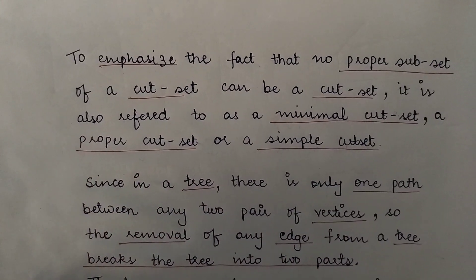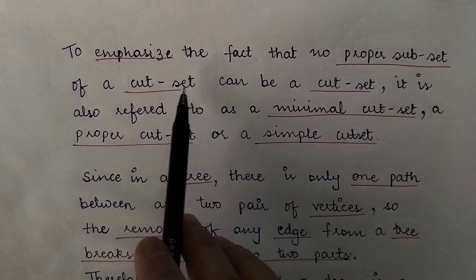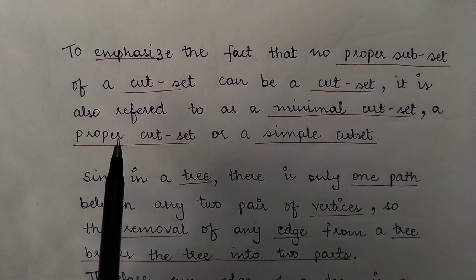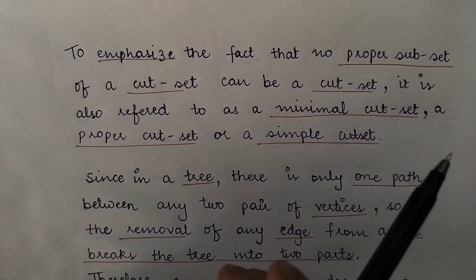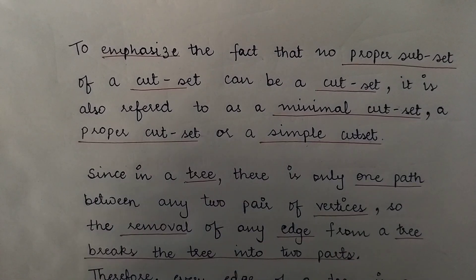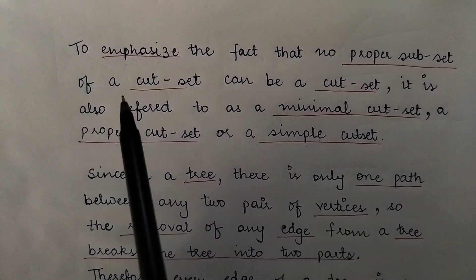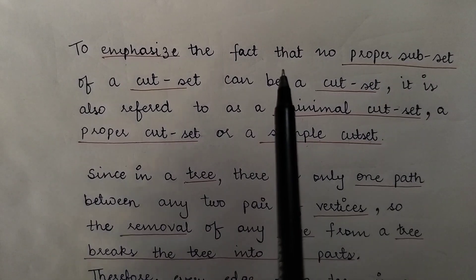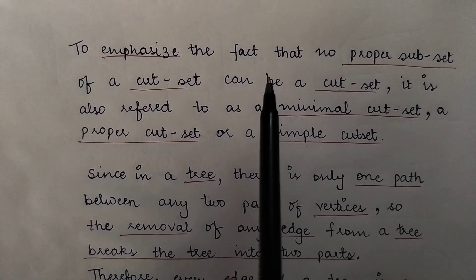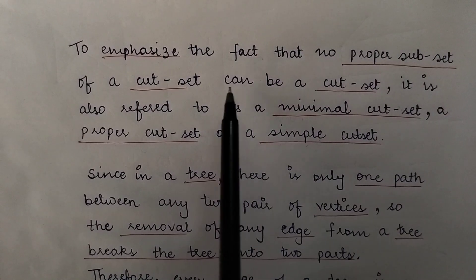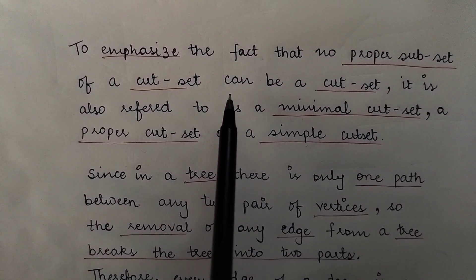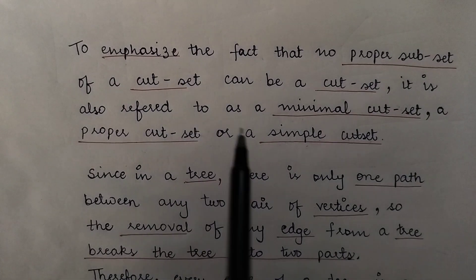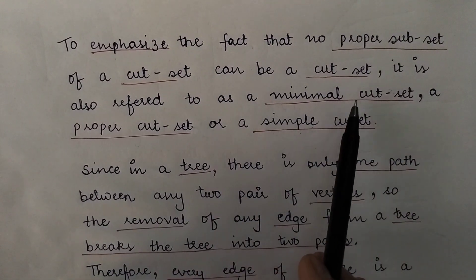To emphasize the fact that no proper subset of a cut set can itself be a cut set, a cut set is also referred to as a minimal cut set, a proper cut set, or a simple cut set. This terminology stresses that if a set of edges divides the graph into two separate components, no proper subset of those edges should also divide the graph into two separate components.